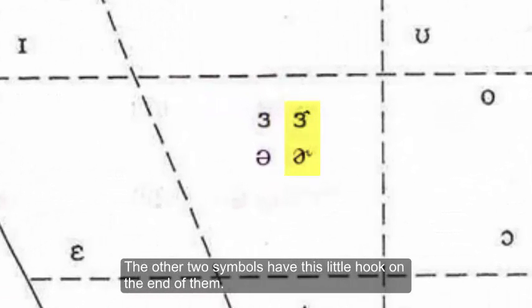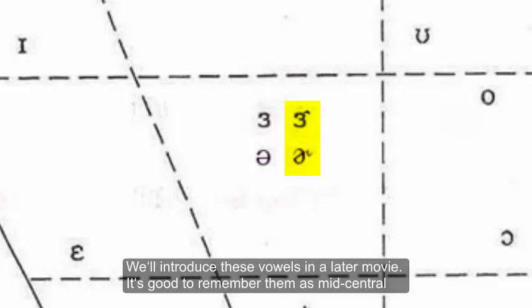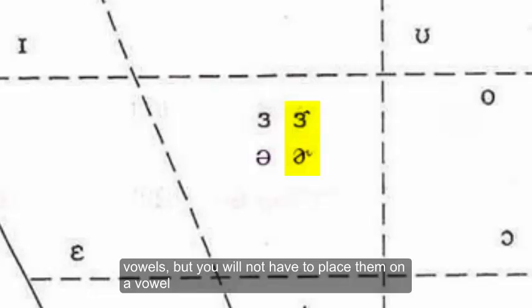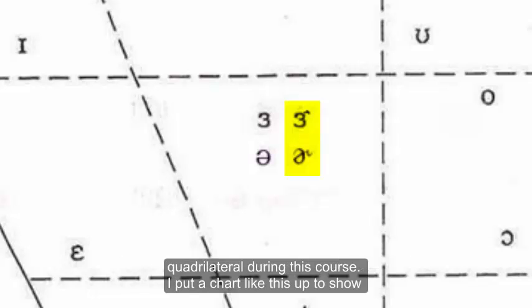The other two symbols have this little hook at the end of them. We'll introduce these vowels in a later movie. It's good to remember them as mid-central vowels, but you won't have to place them on a vowel quadrilateral during this course.